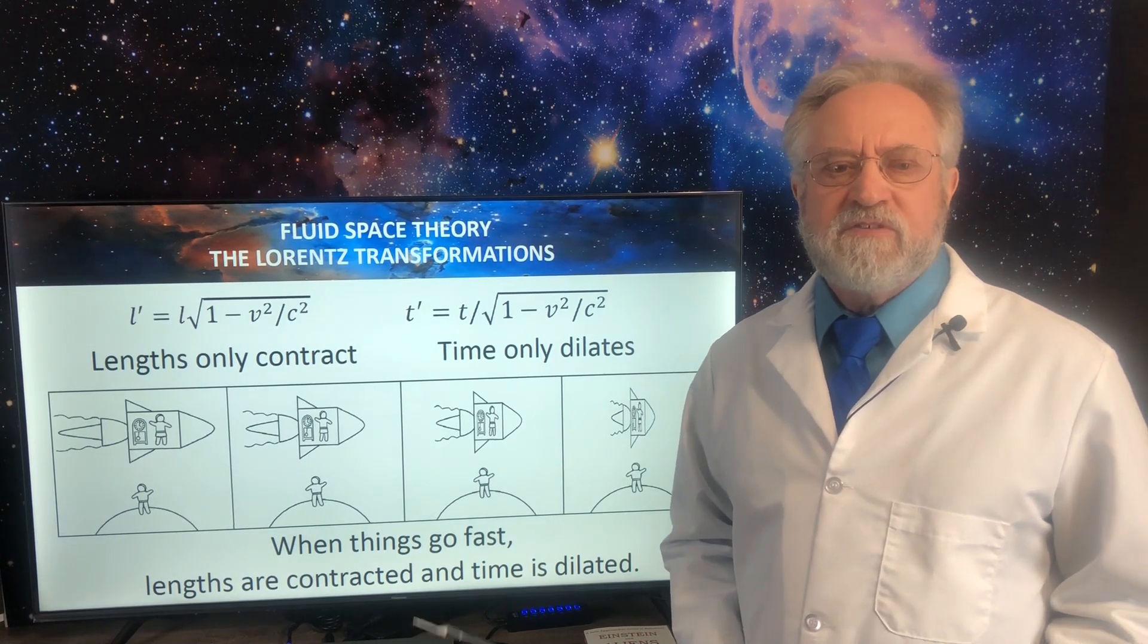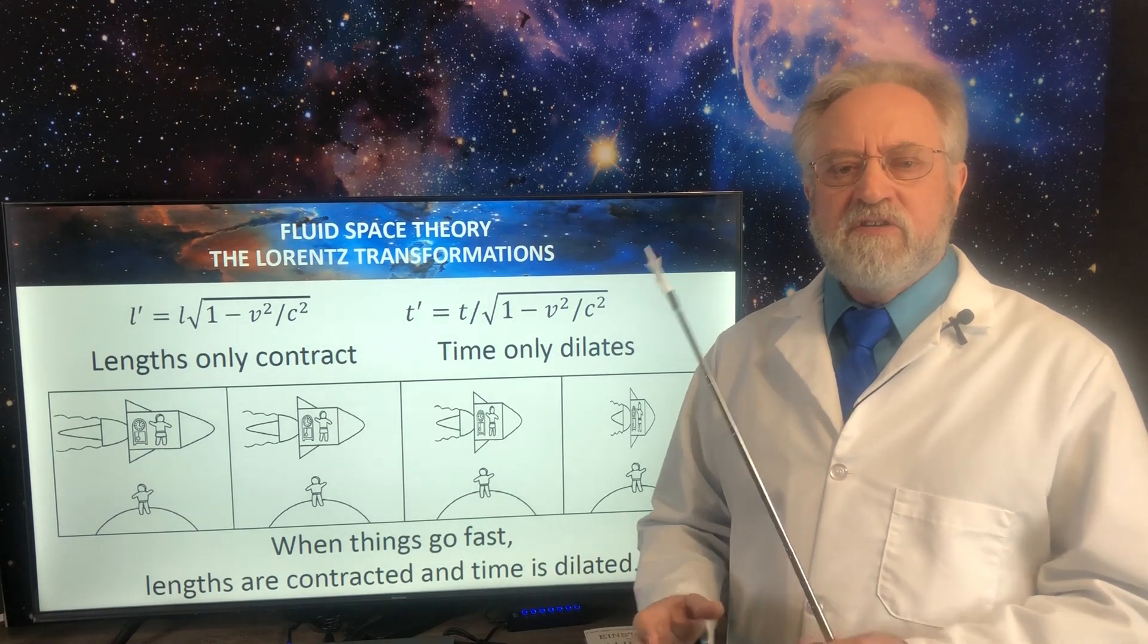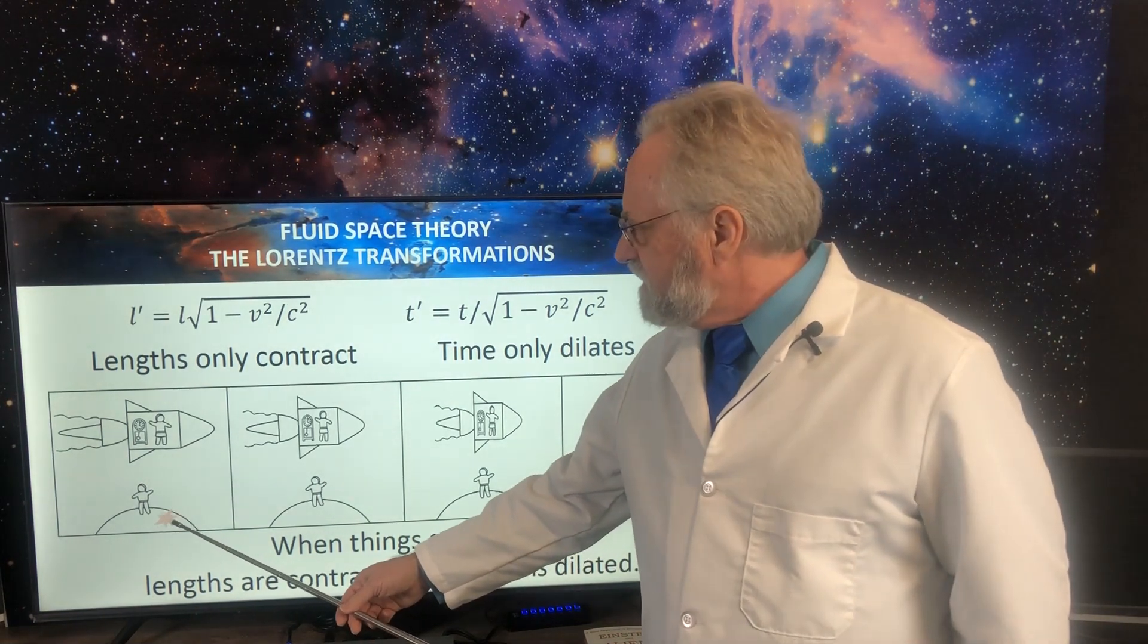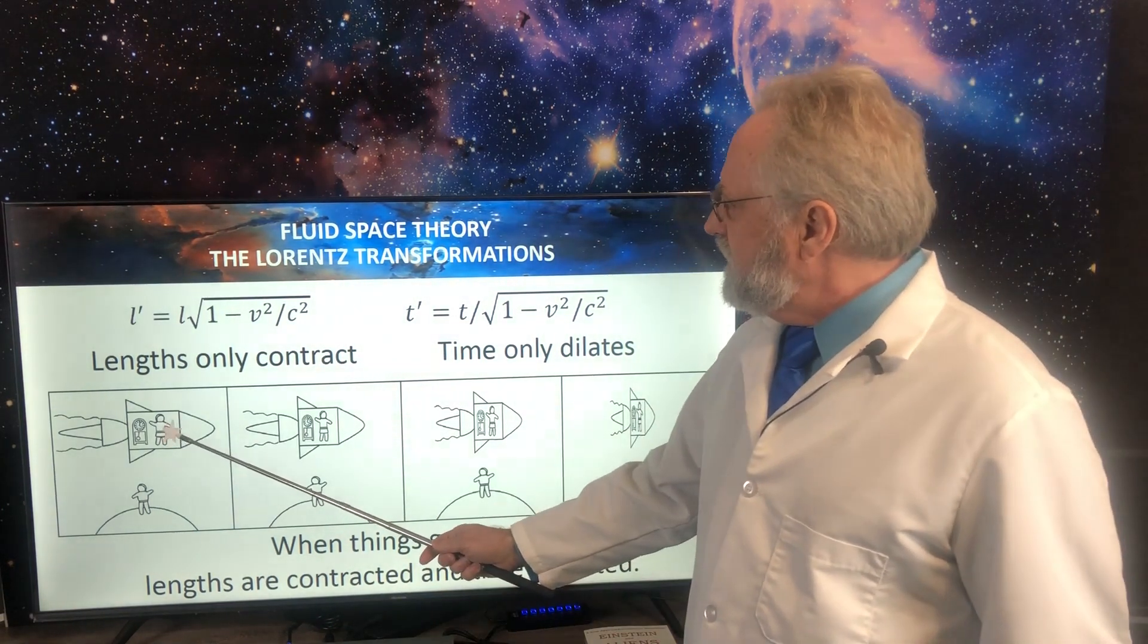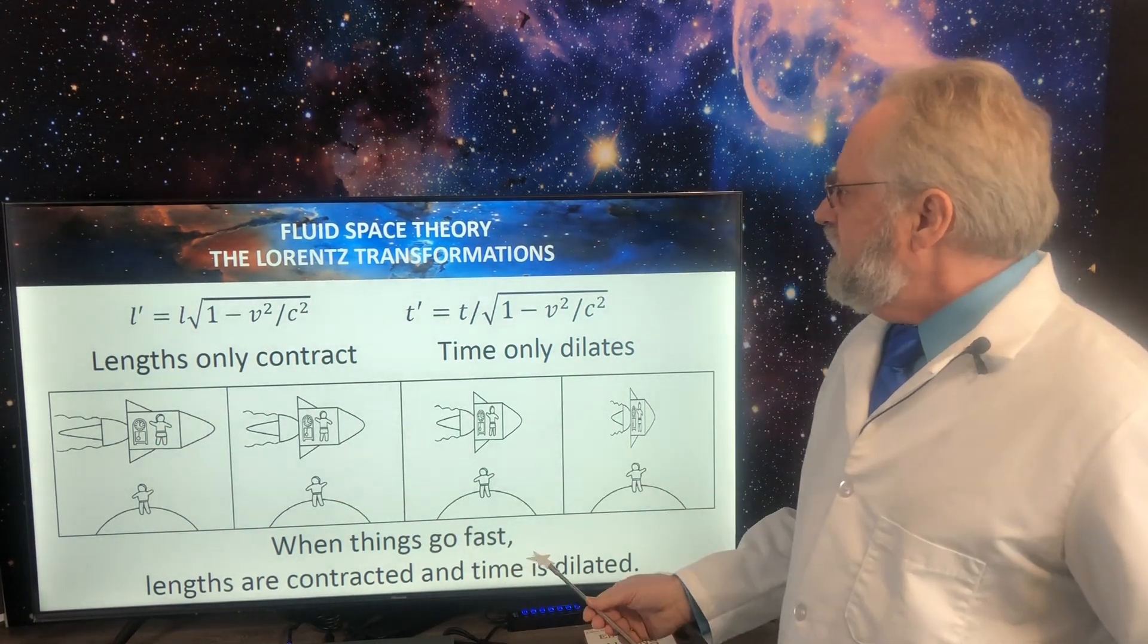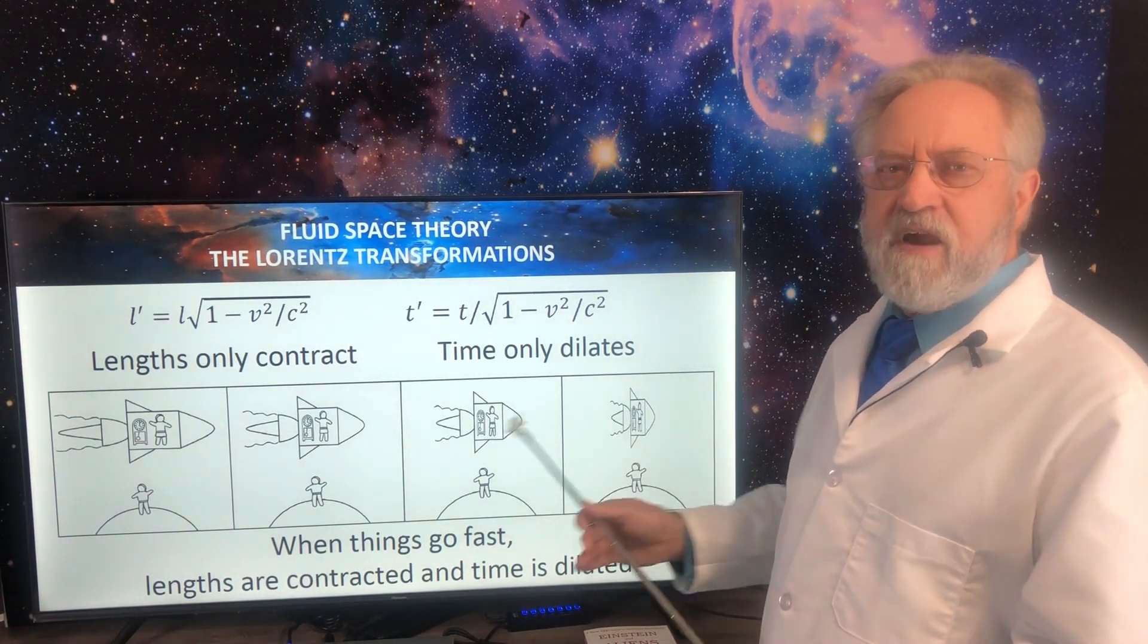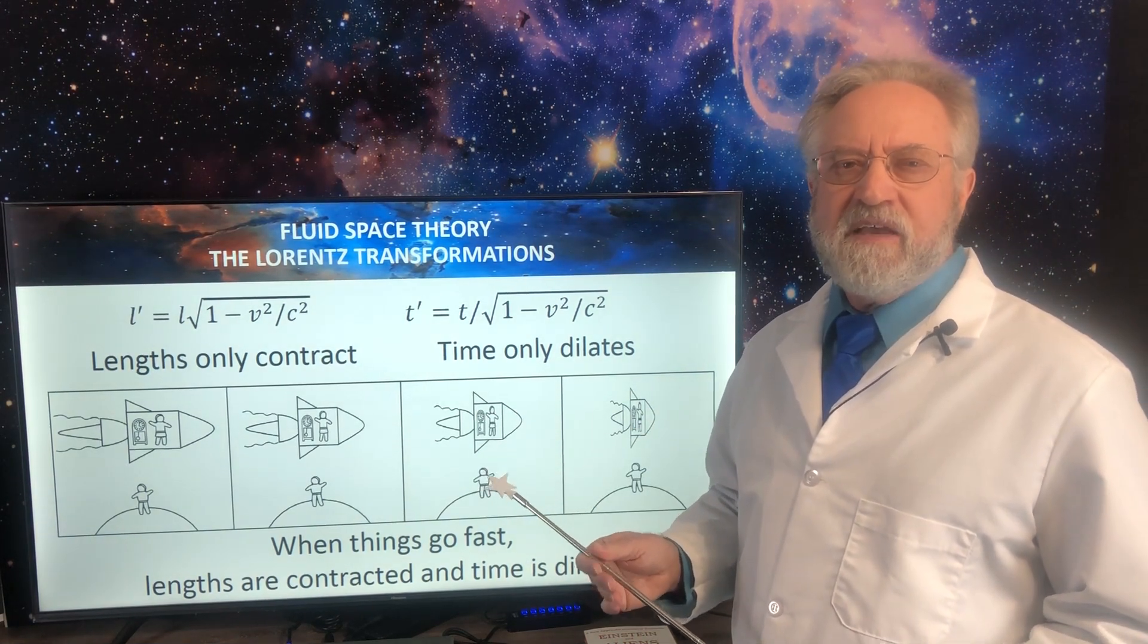So to explain this, Einstein came up with special relativity. And what special relativity does is it allows you to compare two separate reference frames. There's usually a stationary reference frame, which we see Stan on the asteroid. He would represent the stationary reference frame. And there's a reference frame in motion. And that would be Ricky on the spaceship flying past. And he came up with the Lorentz transformations that make, no matter which reference frame you're riding in, you always see light at the speed of light, C.